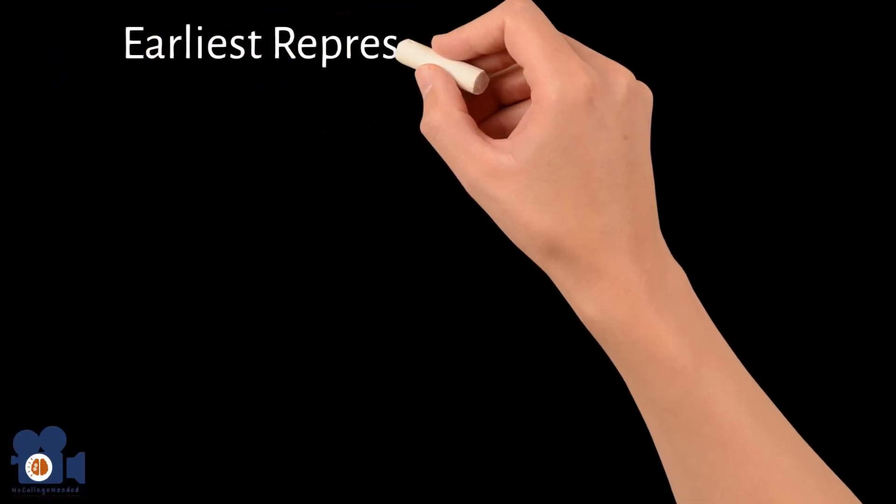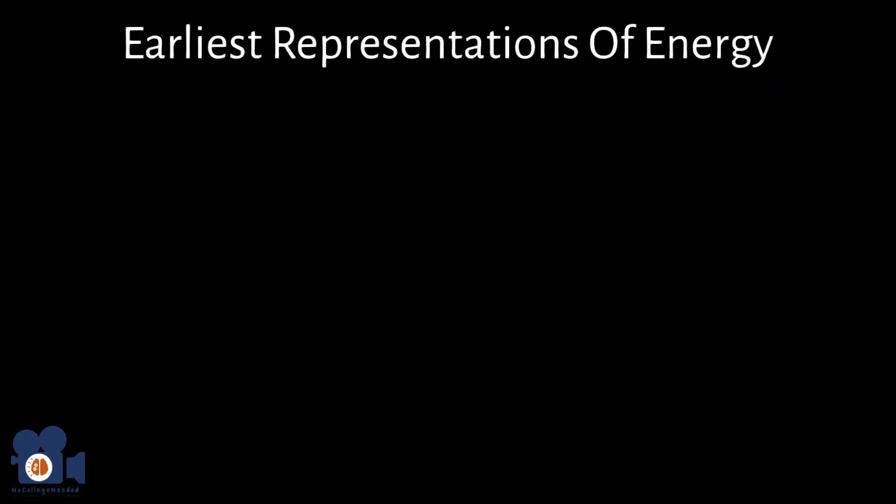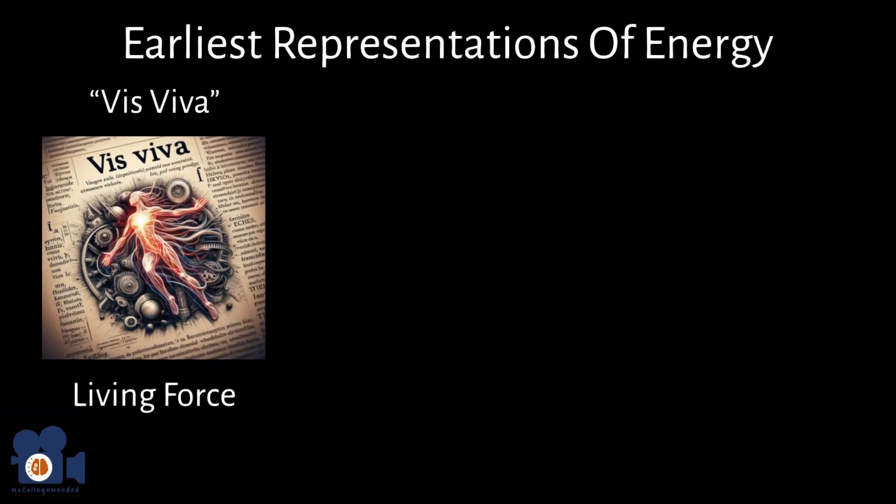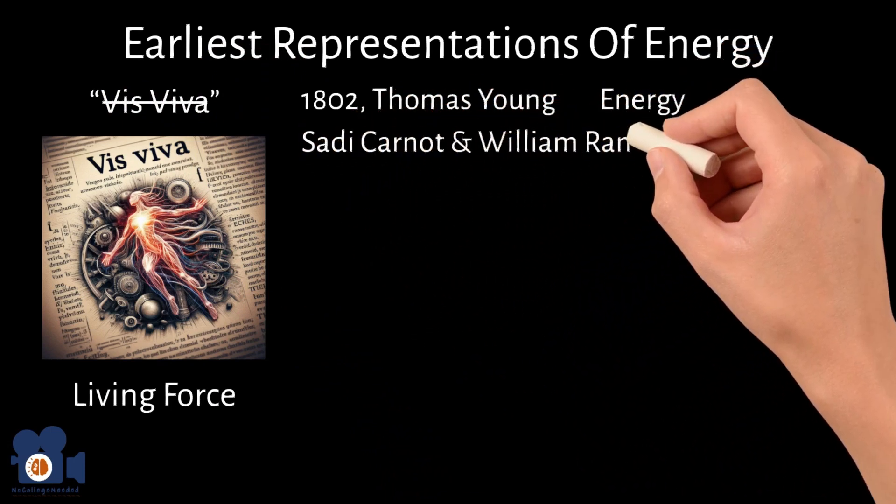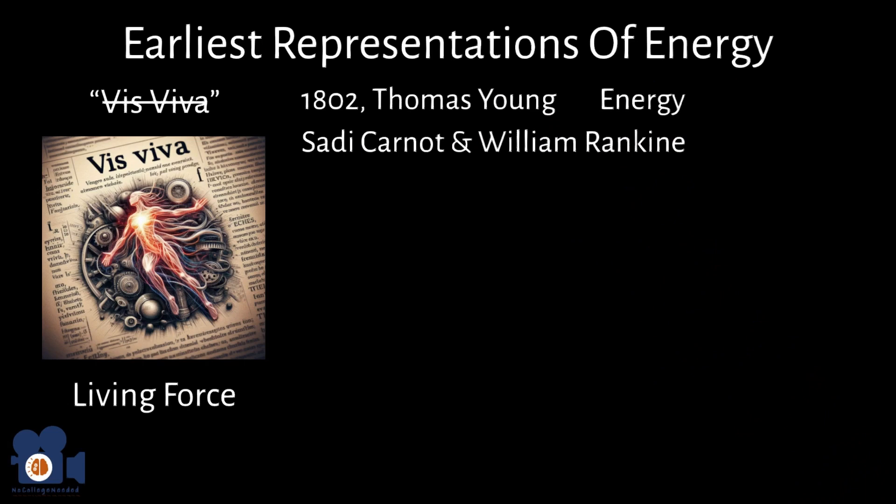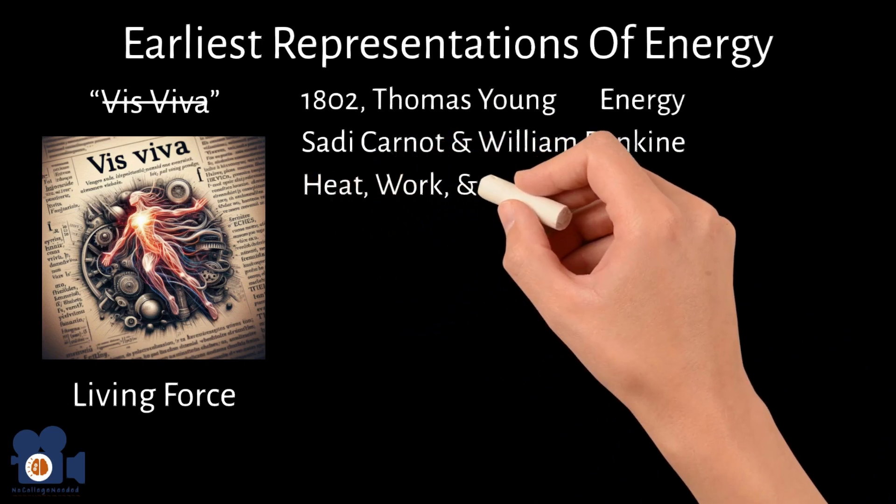Some of the earliest representations of energy were embodied by the Latin term vis viva, meaning living force. However, in 1802, Thomas Young was the first person to replace the term vis viva with energy, and Sadi Carnot and William Rankine further refined this into the modern concepts of heat, work, and different types of energy.